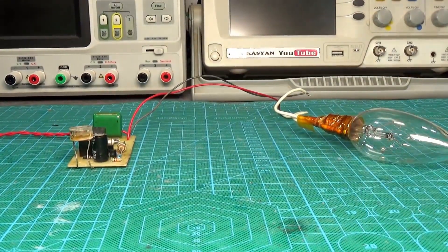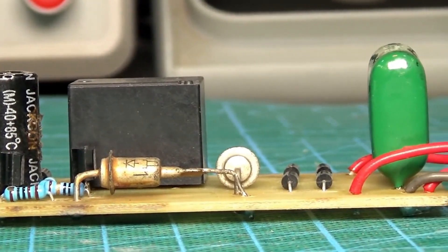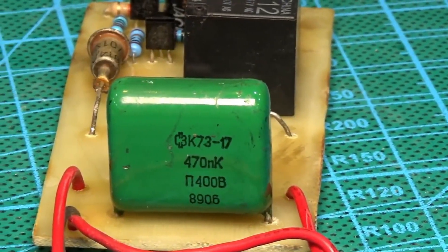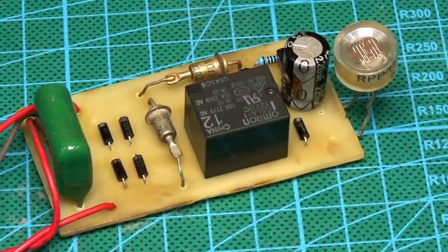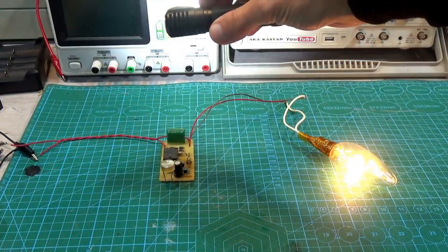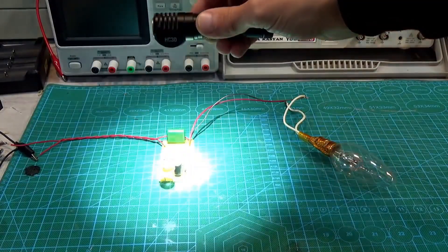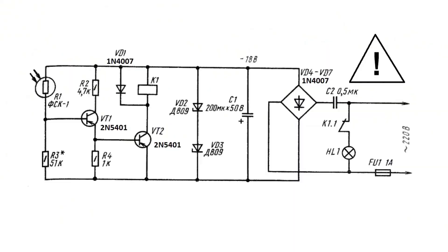All safety measures must be observed when working with mains voltage. Do not touch the working device, and during setup, always unplug it from the outlet. If the circuit contains high voltage capacitors, make sure they are discharged. This simple circuit turns on the lighting when it gets dark and turns it off in the morning. On the right side of the circuit, there is a transformerless power supply with a ballast capacitor that provides current limiting. Then the mains voltage is rectified and smoothed. A pair of Zener diodes ensure stable voltage at the output.